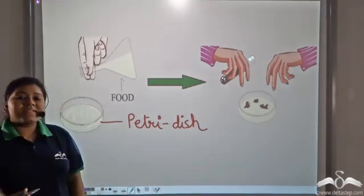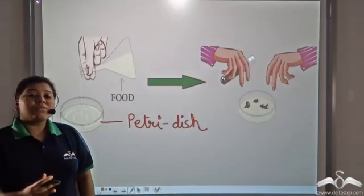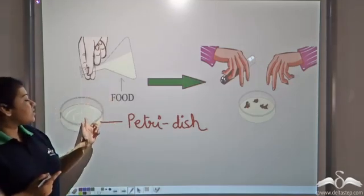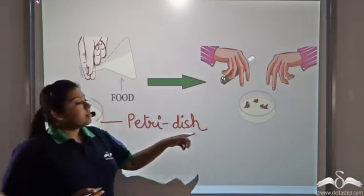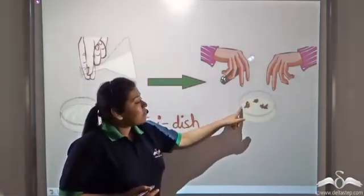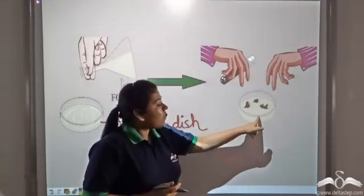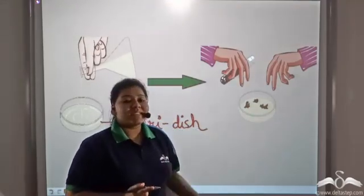And then the scientist poured a solution that had water and mineral in it. Now, the plant tissues were planted on this layer of food containing solution.